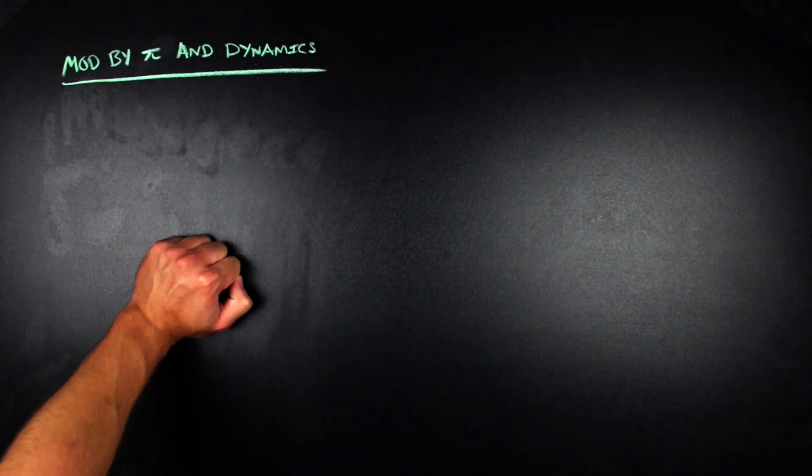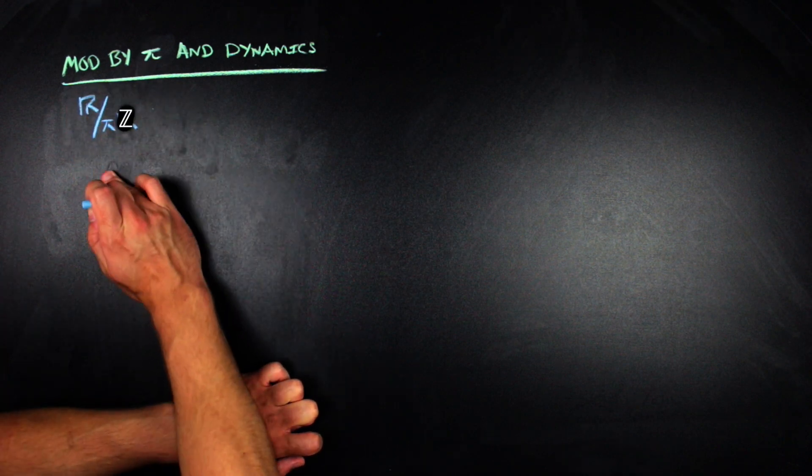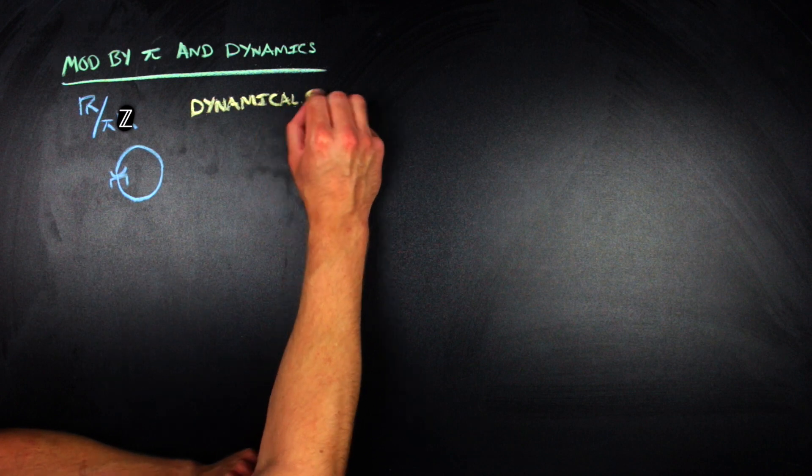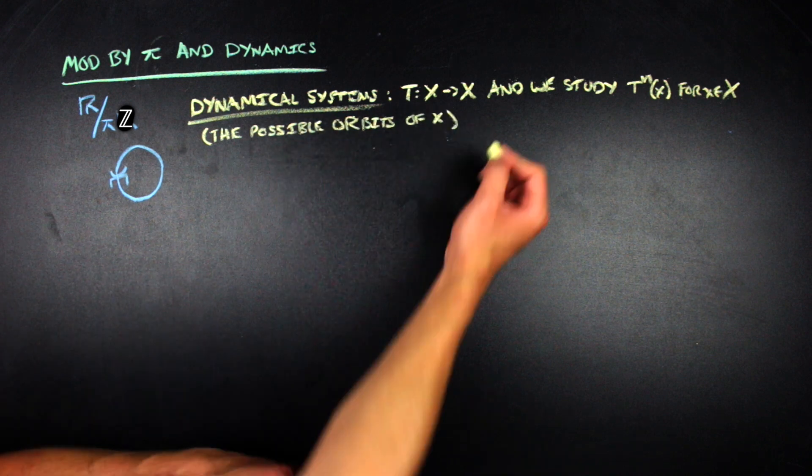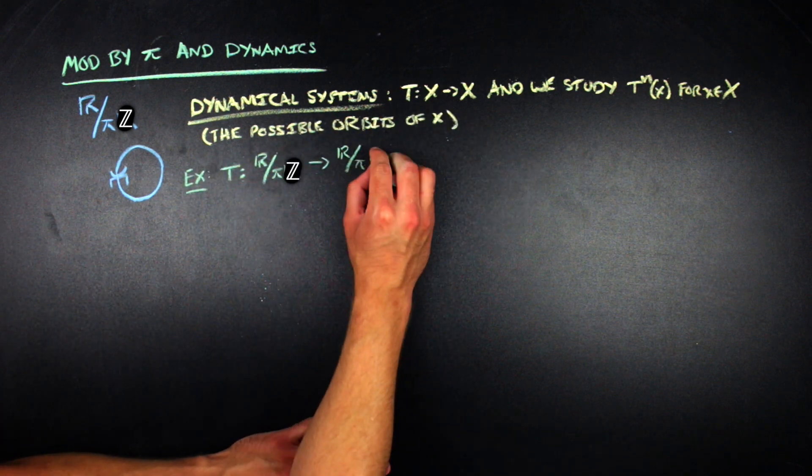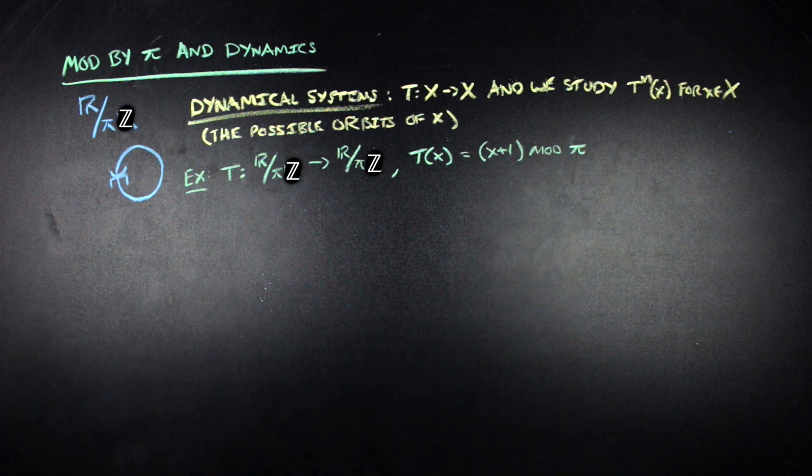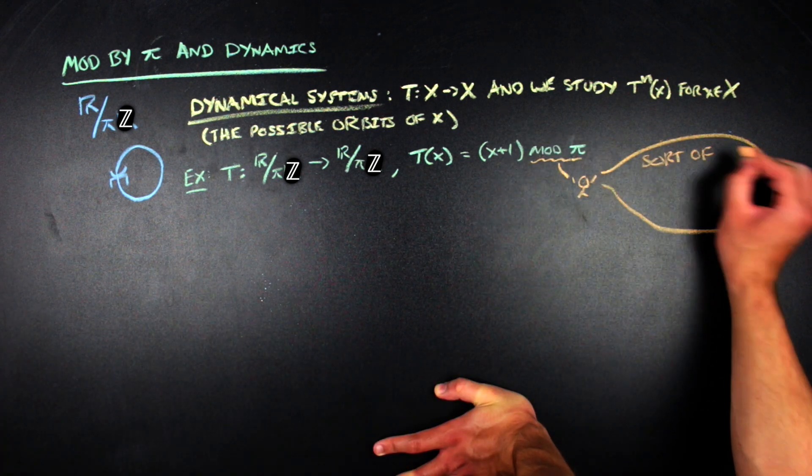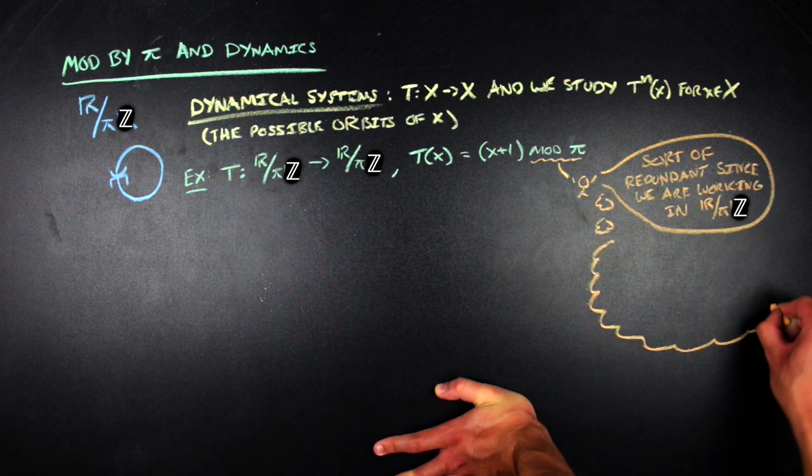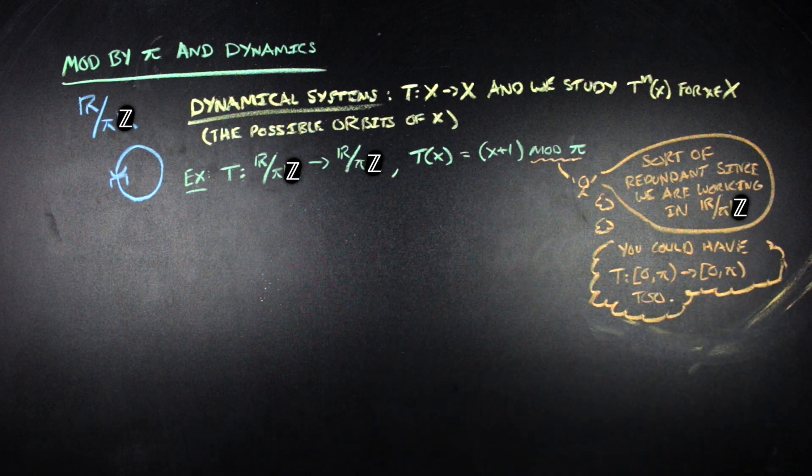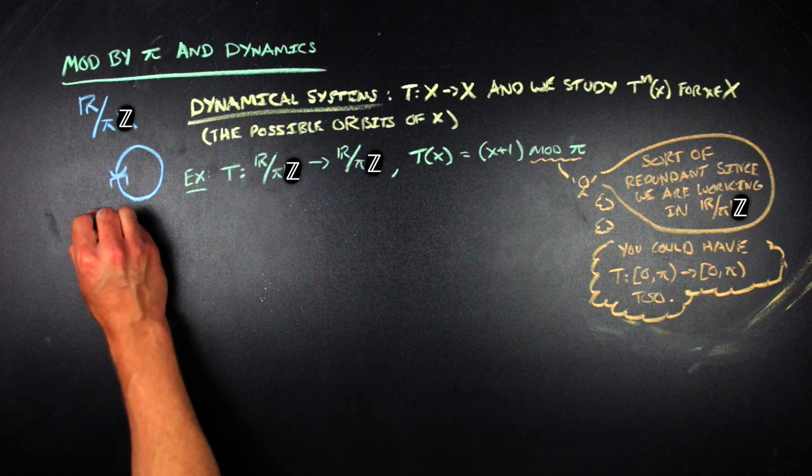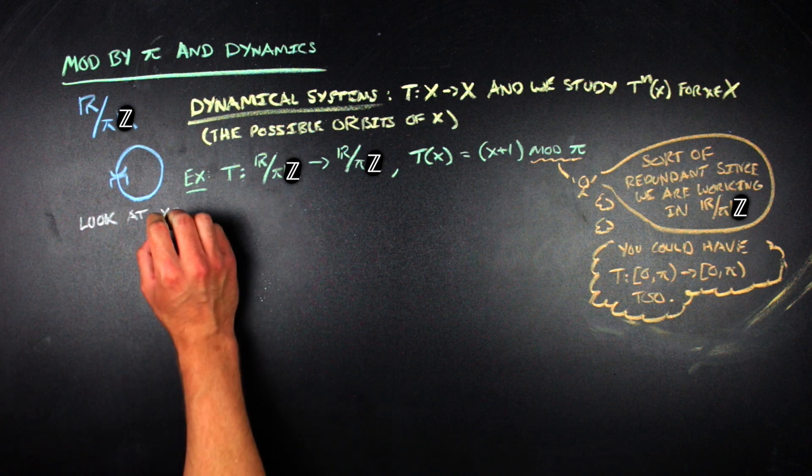So when I'm talking about dynamics, generally speaking, what I'm talking about is I'm talking about a function from a space to itself. And we look at points in that space as this function continually iterates over and over and over again on that single point. So if we take our T on our R mod aZ thing with a being pi, then we can define that T(x) is equal to x plus 1 mod pi. And so anyway, we can look at, let's say, how the orbit of zero works out. And when we look at the orbit of zero, we just look at iterating T n times on zero.